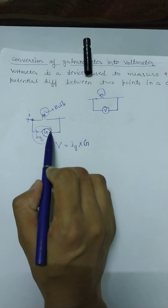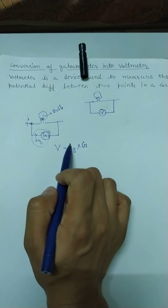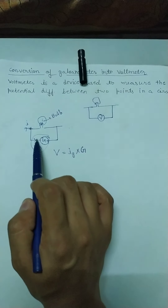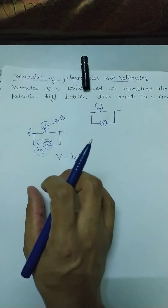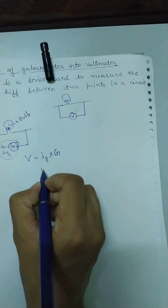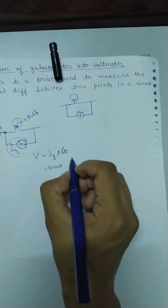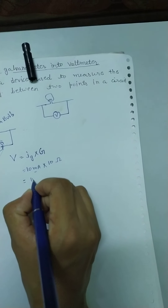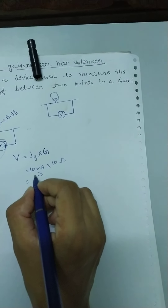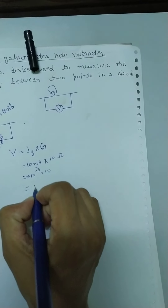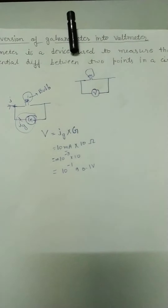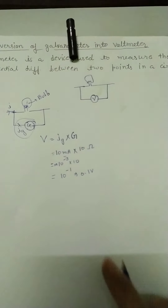Jab full-scale deflection hogi yahan pe, to yeh kitna potential difference measure kar payega? IG ki value bahut kam hoti hai — very very small — milliampere ya microampere mein measure karta hai. Maan liya IG = 10 milliampere aur galvanometer resistance G = 10 ohm. To V = 10 × 10⁻³ × 10 = 10⁻¹ = 0.1 volt. Full-scale deflection par bhi sirf 0.1 volt measure ho paaya.